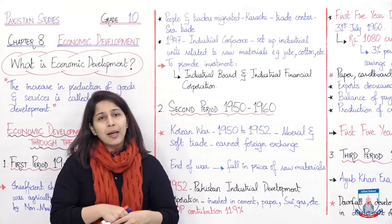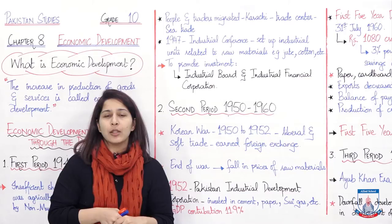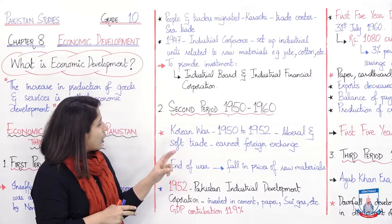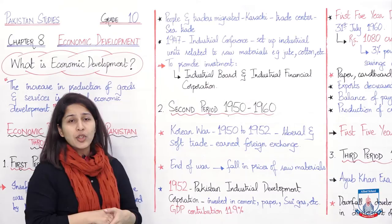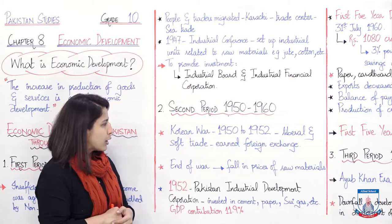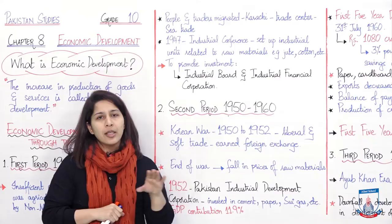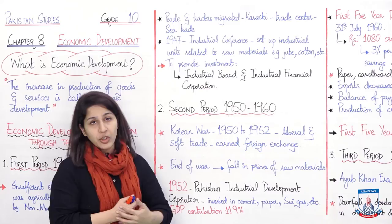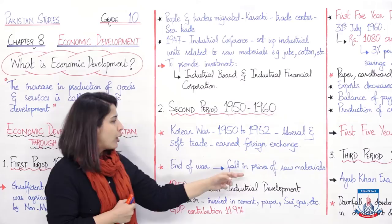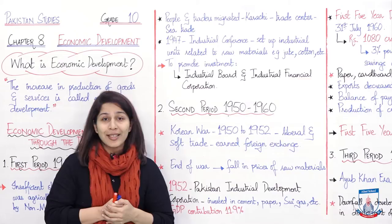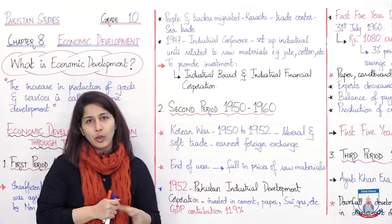Agla era tha the second period — 1950 to 1960. On the international front, Korean War was going on 1950 to 1952. Is war ke dauran liberal and soft trade continued and Pakistan earned foreign exchange — export imports ki aur foreign exchange earn kiya. Yeh ek positive point tha. But by the end of war, there was a fall in prices of raw materials — jab war khatam hui toh raw materials ki prices girdin aur isne Pakistan ki economy ko negatively impact kiya.